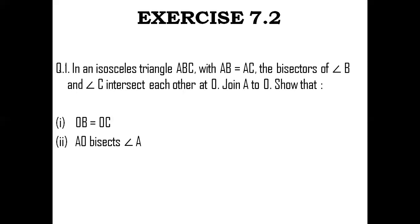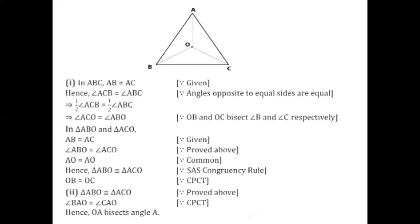Let us complete the question. It says: show that OB is equal to OC, and also AO bisects angle A. Let us get to the solution of question number 1. This is how the figure would look with the given data. Let us get to the first part, wherein we have been asked to prove triangle ABO congruent to triangle ACO — in other words, OB is equal to OC.